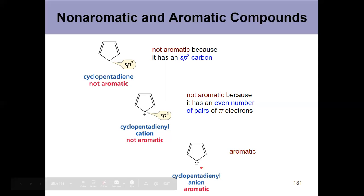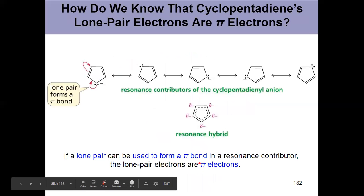Well, ask yourself the question, can I draw a resonance contributor where those can be used to form a pi bond? If you can, then you can include these in your electron count for something to be aromatic, which is exactly what this is showing right here.